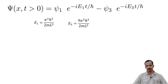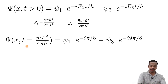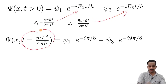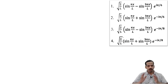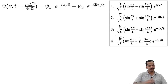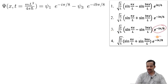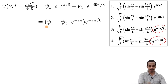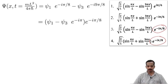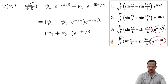This is the state at later time. They are asking what is the state at t equal to mL-squared over 45 h-bar. When we substitute E-1, E-3, and t equal to mL-squared over 45 h-bar, we end up with this equation. Don't solve the question completely without seeing the options. Looking at the options, we can see that in options 3 and 4, e to the power minus i pi over 8 is outside the bracket. So let me factor that out, and I end up with psi-1 minus psi-3 times e to the power minus i pi, multiplied with e to the power minus i pi over 8. Since e to the power minus i pi equals minus 1, this becomes psi-1 plus psi-3 times e to the power minus i pi over 8. That means option 4 is the right answer.